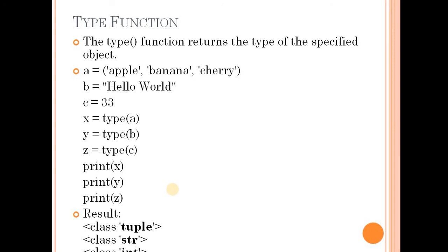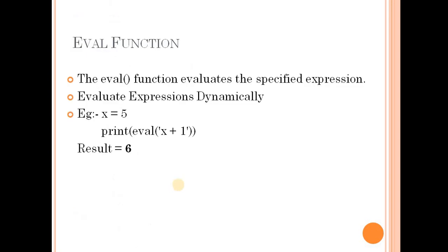This is the type function — it returns which type of data was declared or defined. Then the next one is the eval function. Eval means evaluate. It evaluates a specified expression dynamically. For example: x equal to 5, then print eval('x + 1'). The result is 6. These are some types of functions. Thank you.